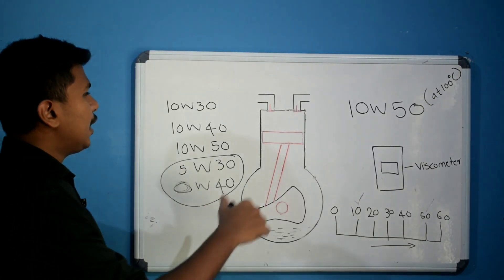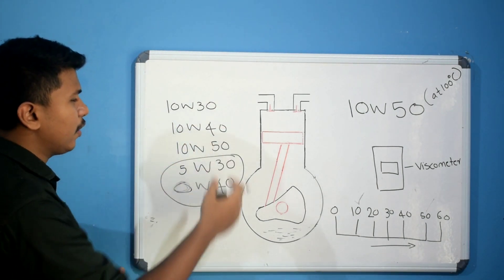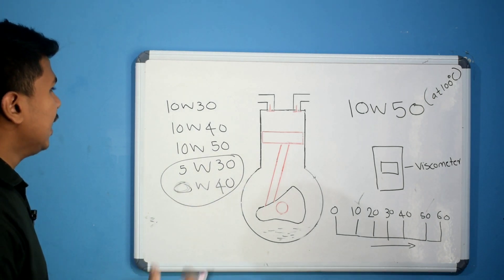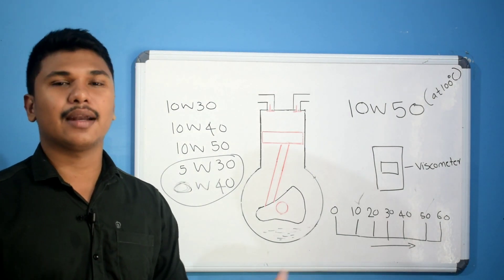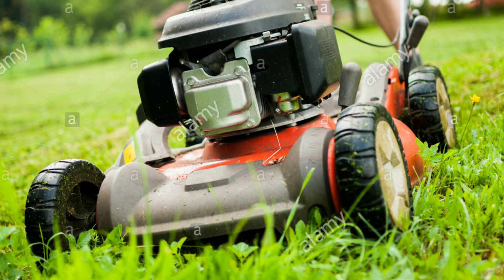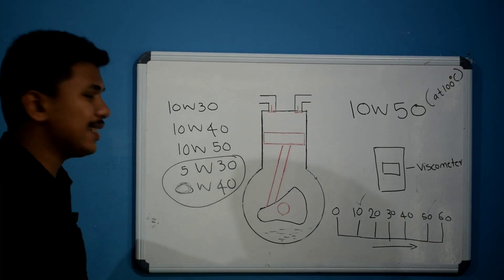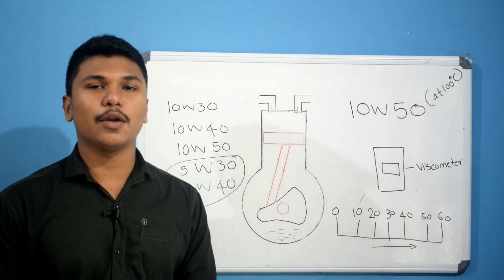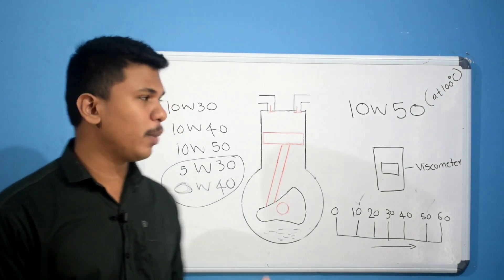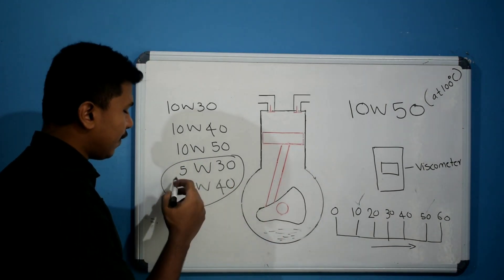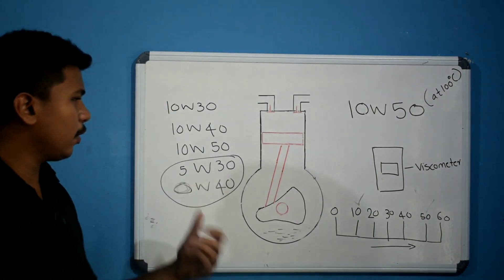Multi-grade oil maintains acceptable viscosity across both high and low temperatures. Single-grade oil, by contrast, is used in specific applications such as small engines, garden equipment, and generators. Multi-grade oils starting with 5W or 0W are suitable for a large temperature range, allowing good cold-start performance as well as maintaining viscosity at high operating temperatures.